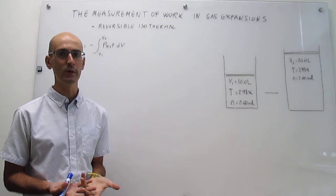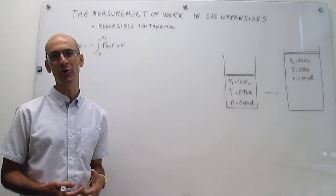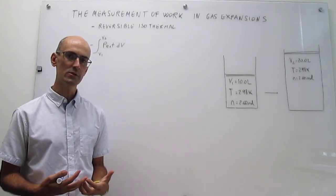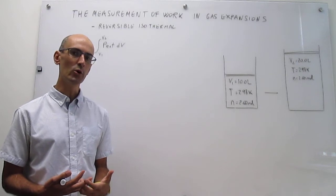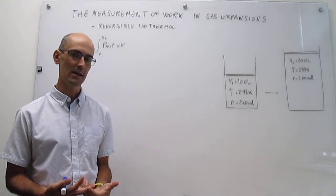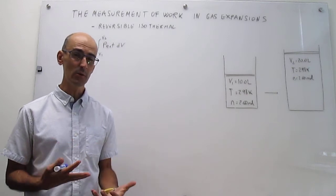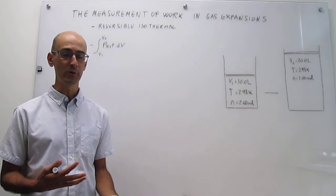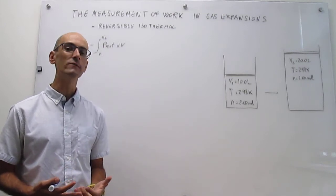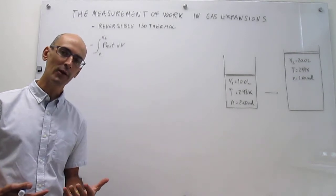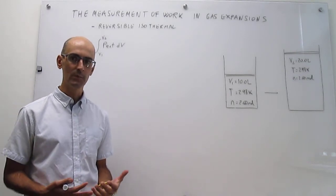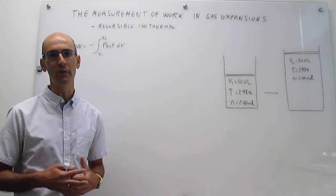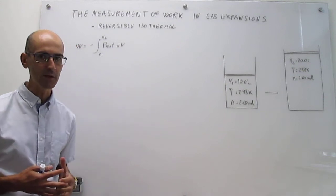In the last video we saw what happens when you carry an expansion against a constant external pressure. Now, what we'll do here is ask the question: what is the maximum work that you can do in a gas expansion? The concept here is that work is something useful, so for any particular process you'd like to extract as much of the energy as work as possible. For gas expansions, the way to do that is by doing it in what is called a reversible way.